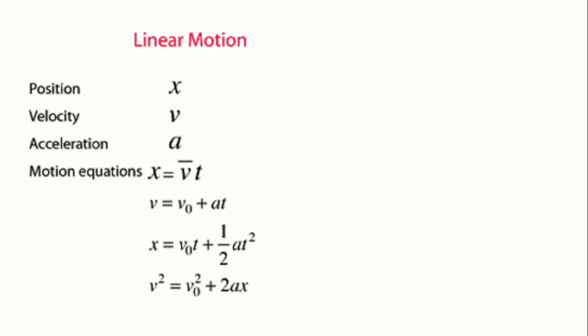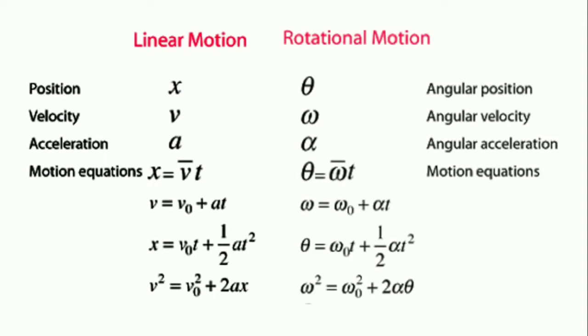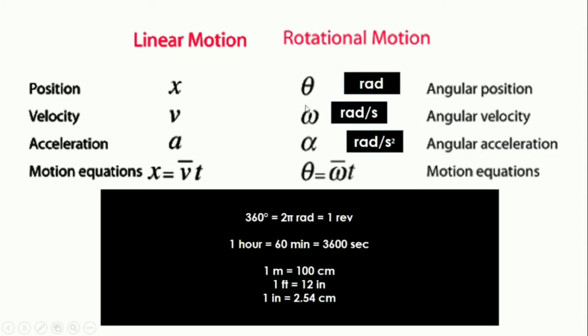We have learned in translational motion the quantities needed to identify and mostly solve in problems, and these have equivalents in rotational motion. The position x became angular position theta, the velocity v became angular velocity omega, the acceleration a became angular acceleration alpha. These are the motion equations that are mostly used, and we must also take note of the units to be used for uniformity and smoothness in solving problems.